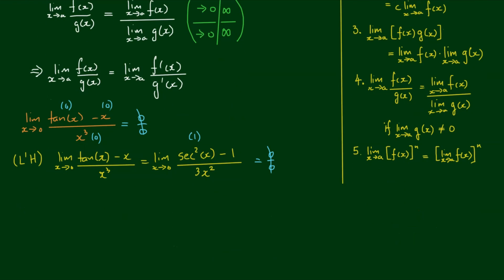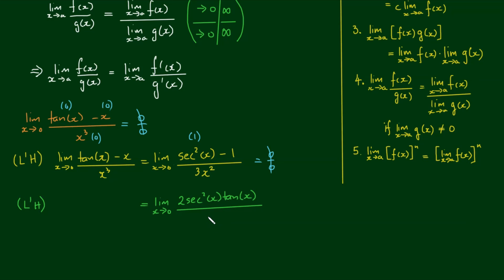By L'Hôpital's rule, the limit of sec²(x) minus 1 over 3x² equals the limit as x approaches 0 of the derivative of sec²(x), which is 2·sec²(x)·tan(x) — I'll leave a link in the description for that derivation — over the derivative of 3x², which is 6x. Bringing the constants out front, we reduce to one third times the remaining limit.